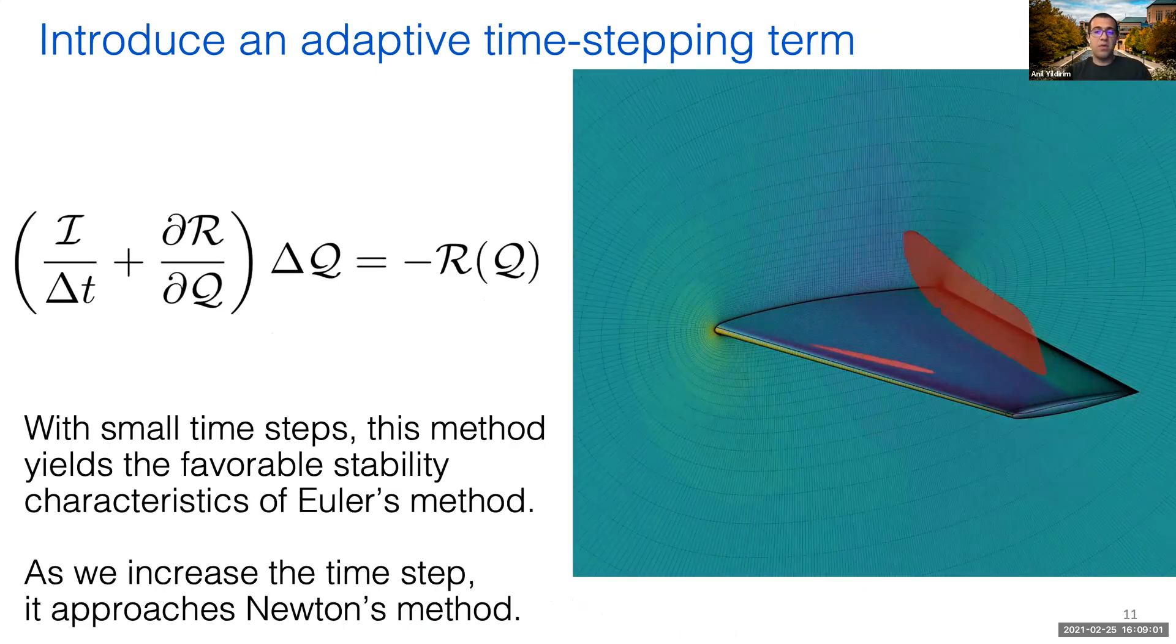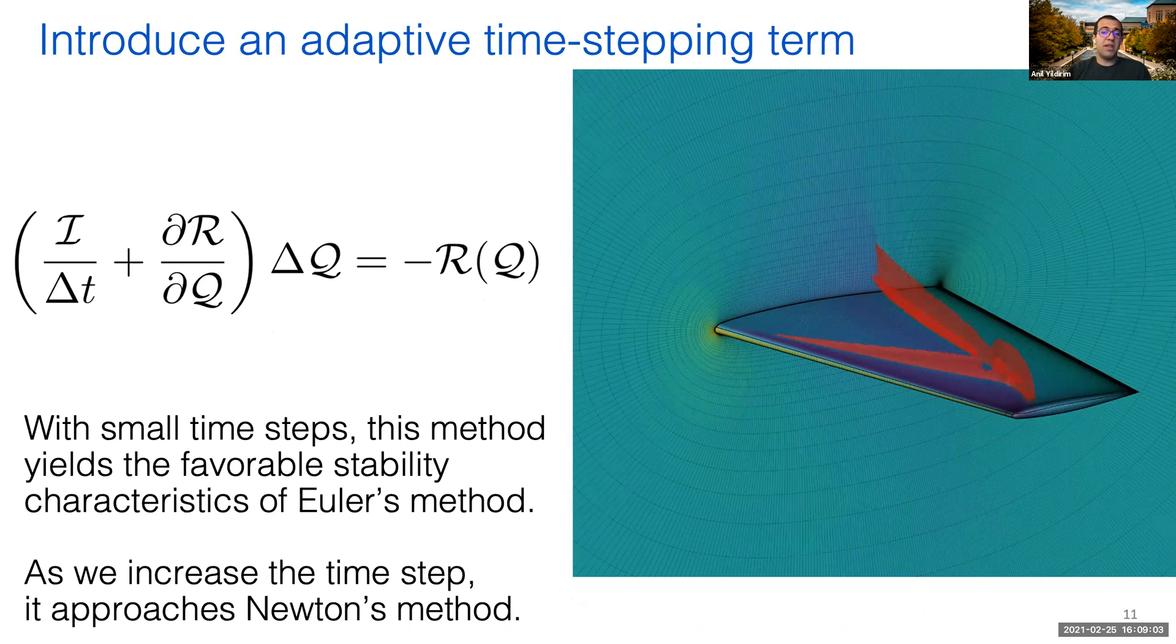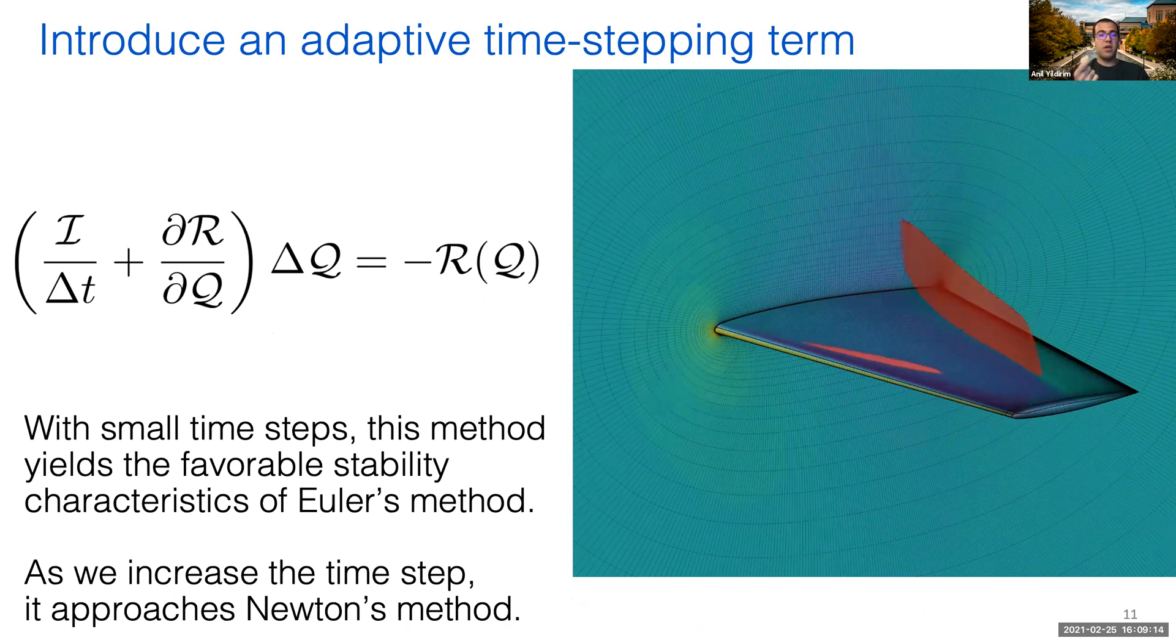To address this issue, we add a time-stepping term on the left-hand side. At small time steps, this gives us a standard backward Euler method. At large time steps, the time-stepping term drops out and we recover Newton's method. This approach is called pseudo-transient continuation, and we use this method to stabilize the transients in our solution during the initial stages.